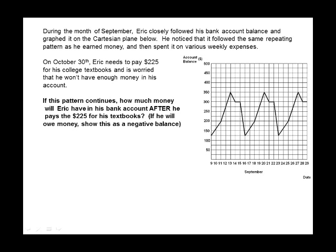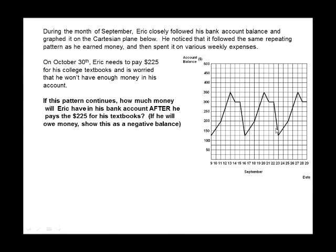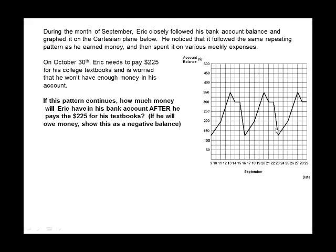During the month of September, Eric closely followed his bank account and graphed it on the Cartesian plane shown below. He noticed that it followed the same repeating pattern as he earned money and then spent it on various weekly expenses. On October 30th, Eric needs to pay $225 for his college textbooks and is worried that he won't have enough money in his account.